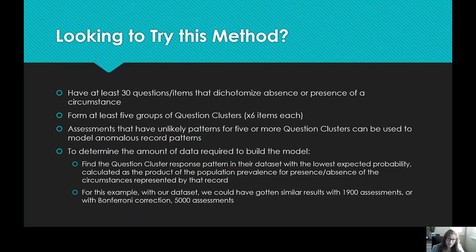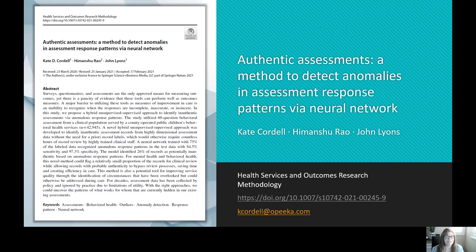If you're looking to apply this method, this analysis shows we could have done it with a lot fewer records — about 5,000 records — we used 43,000 because that's what we had on hand. You can apply this method with a CANS with 30 questions or one with 60 questions. The more questions you have, the more data you'll need to look across those unlikely patterns, but in this example we could have done it with about 5,000 records. Thank you very much for your time. Feel free to reach out to me at kcordell@opica.com if you have any questions or would like more information about our research.